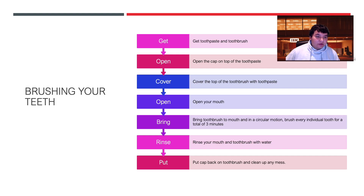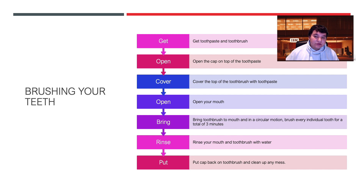The first algorithm I want to go over is brushing your teeth. First, get the toothbrush and toothpaste. Open the cap on the top of the toothpaste. Cover the top of the toothbrush with toothpaste. Open your mouth, bring the toothbrush to your mouth, and in a circular motion brush every single individual tooth for a total of three minutes. Rinse your mouth and toothbrush with water, put the cap on the toothbrush, and clean up any mess.